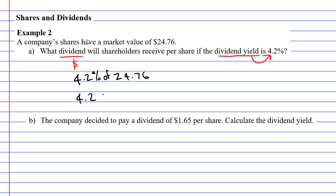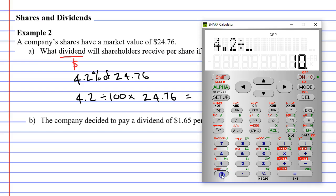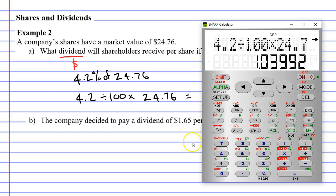We can go 4.2 divide 100 and multiply it by the amount of $24.76. Now, 4.2 divide 100 times $24.76. If we round it to the nearest cent, we get $1.04.